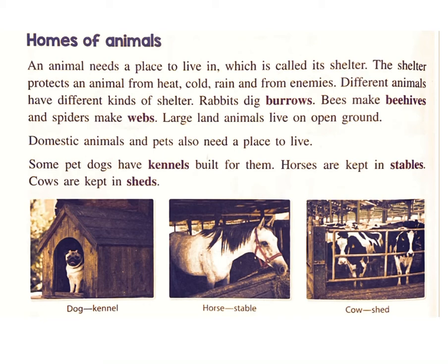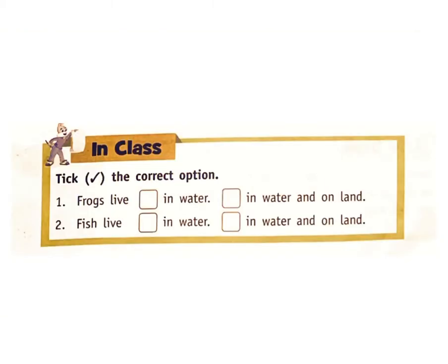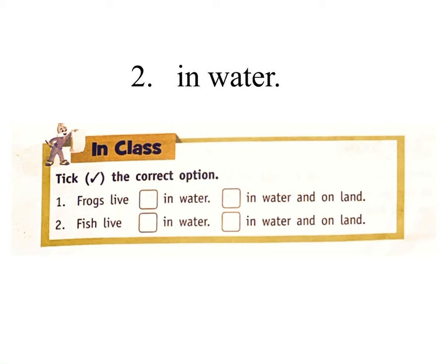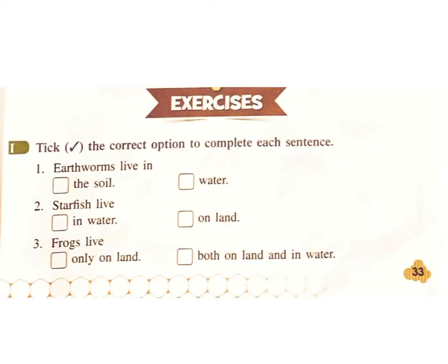Some pet dogs have kennels built for them. Horses are kept in stables. Cows are kept in sheds. In class: One — frogs live in water and on land. Two — fish live in water.